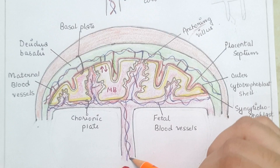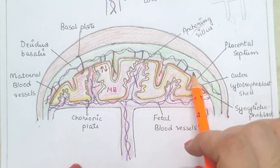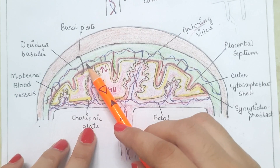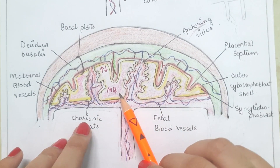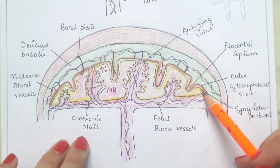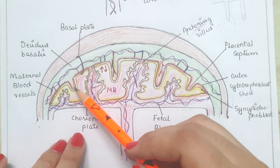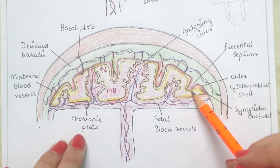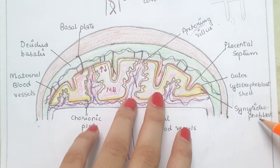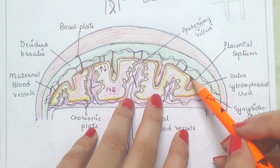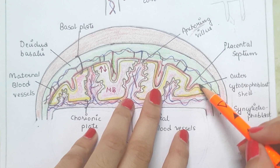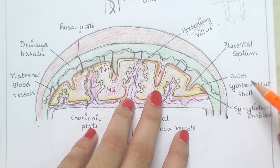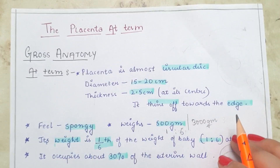Here you can see the fully developed placenta at term. These are fetal blood vessels supplying blood to the fetus through the umbilical cord, and these are maternal blood vessels. The chorionic plate is the fetal side, and the basal plate is the maternal side. The intervillous spaces contain maternal blood. There are 15 to 20 cotyledons present, limited by fissures or grooves known as the placental septum.